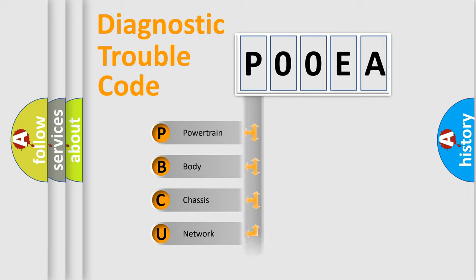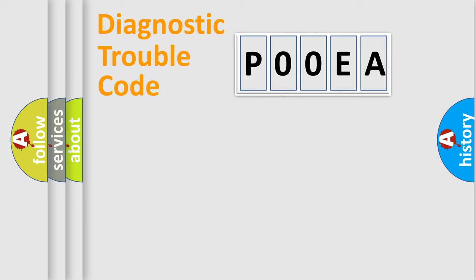We divide the electric system of automobile into four basic units: Powertrain, Body, Chassis, and Network. This distribution is defined in the first character code.